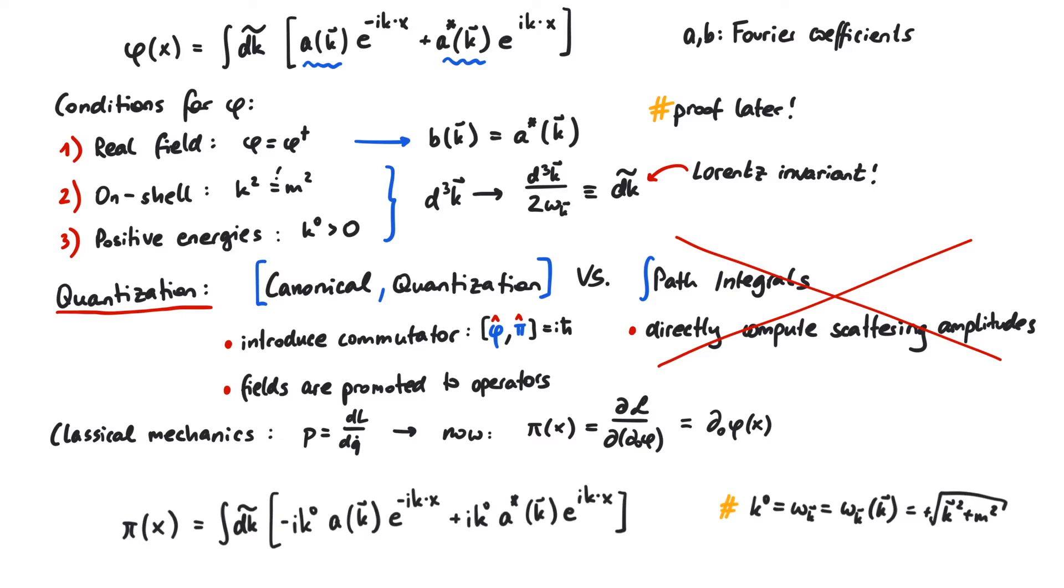Since phi and pi are now operators, a and a star are operators as well. To remember this, let's write a star as a dagger from now on.